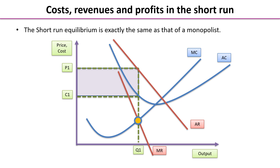We start with the short-run equilibrium, and you can see that the graph here looks exactly the same as it does for a business which is in a monopoly. We have a downward sloping average revenue curve, marginal cost and average cost curves as you would normally expect to see, and that means the firm is making supernormal profit — the difference between P1 and C1 for each of the items that they sell.